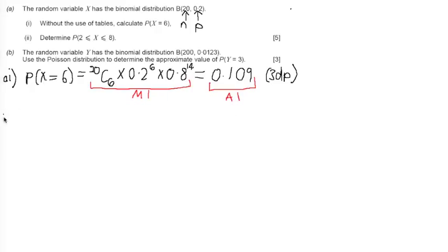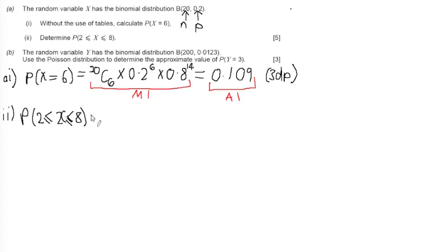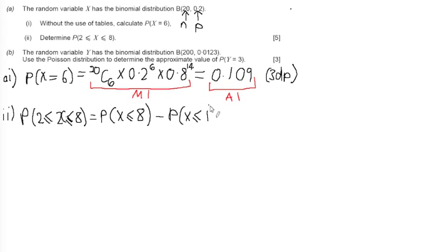Let's have a look at part 2 of A. It says we want to calculate the probability that X lies between 2 and 8, and it can be equal to 8. So what this means is we're going to take the probability that X is less than or equal to 8, and subtract all the probabilities before 2, so that's probability of X less than or equal to 1.